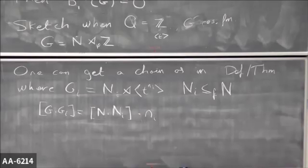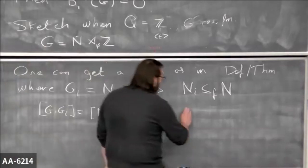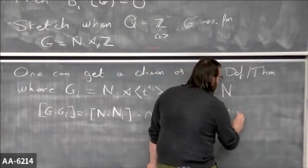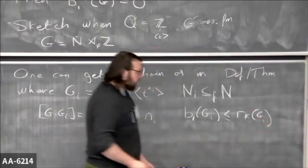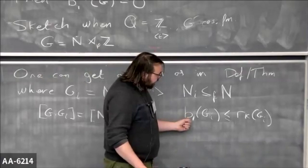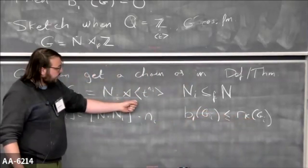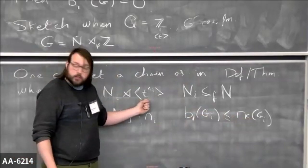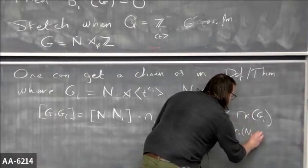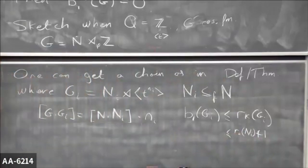Now I want to compute what's going on — in particular, the first Betti number of these groups. Note that the first Betti number of Gᵢ is less than or equal to the rank of Gᵢ (the minimal size of a generating set), since the first Betti number is just the rank of homology. When you abelianize, you might have fewer generators but not more. A generating set for Gᵢ is a generating set for Nᵢ plus one extra generator, so rank(Gᵢ) ≤ rank(Nᵢ) + 1.